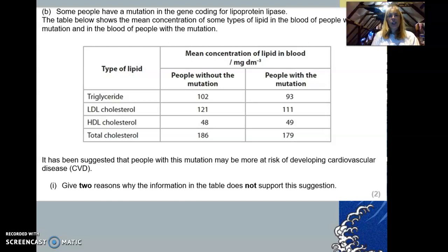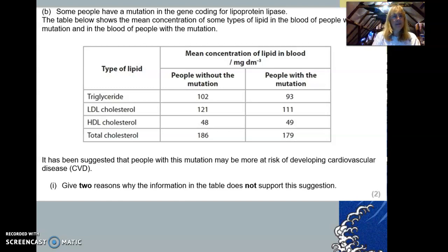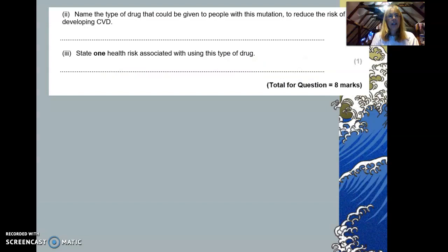Now pause the video for two marks — you have two minutes to answer the next question, which is about analyzing data from a table. Then, as part of this question, name the type of drug that could be given to people with this mutation to reduce the risk of developing cardiovascular disease, and state one health risk associated with using this type of drug.